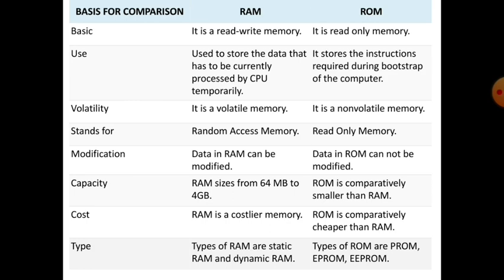Regarding capacity, RAM size ranges from 64 MB to 4 GB, while ROM is comparatively smaller than RAM. Regarding cost, RAM is costlier and very expensive, while ROM is comparatively cheaper. Regarding types, RAM has two types: static RAM and dynamic RAM. ROM has different types: ROM, PROM, EPROM, and EEPROM.